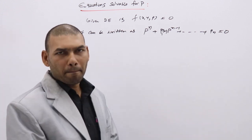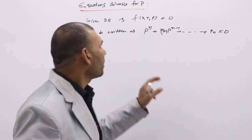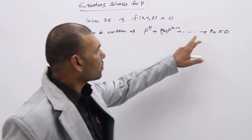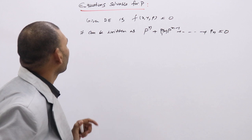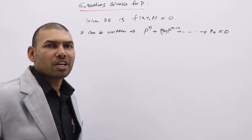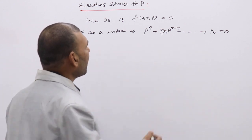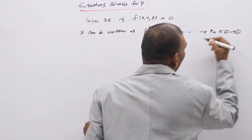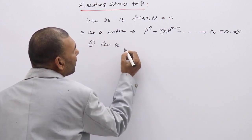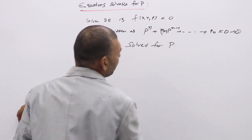For example, like P squared plus P plus a constant. So the general form is P^n + P1(x,y)·P^(n-1) + ... + Pn = 0. Like this, we can express the given DE of first order but not first degree. After expressing it in this form, if we assume this as equation 1, this can be solved for P.